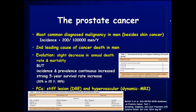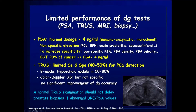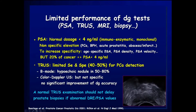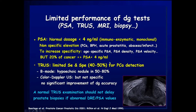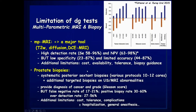Prostate cancer is still a major issue. It is the second leading cause of cancer death in men, and unfortunately most diagnostic techniques — including PSA and even transrectal ultrasound — have limited sensitivity and specificity. Even in a normal transrectal ultrasound examination, we should not delay prostate biopsy in cases of abnormal digital rectal examination or PSA. Multi-parametric MRI is now playing a key role as a major diagnostic tool.